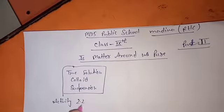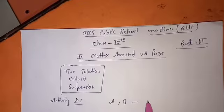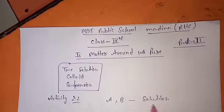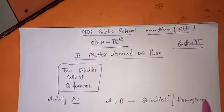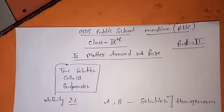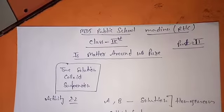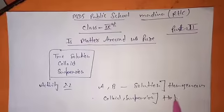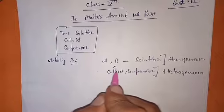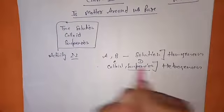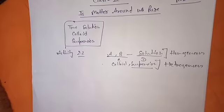In activity 2.2, groups A and B got a solution, which is the only homogeneous mixture. The rest — colloid and suspension — are heterogeneous in nature. Group C got colloids and group D got a suspension, while groups A and B got a solution, which is a homogeneous mixture.